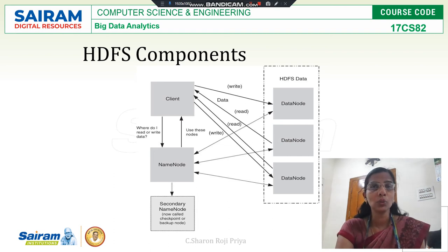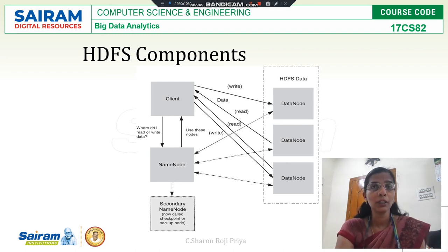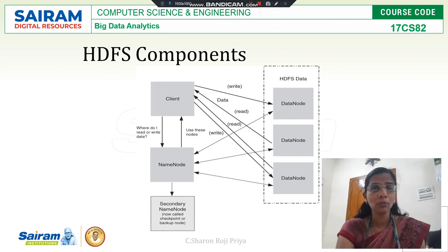The name node stores the metadata, and the data node is the place where the actual data is available. Metadata means data about data — some information needed to store and retrieve the data from the data node will be available in the name node. In the data node, the actual data is stored. There is also one more node known as the secondary name node, which will be explained later.